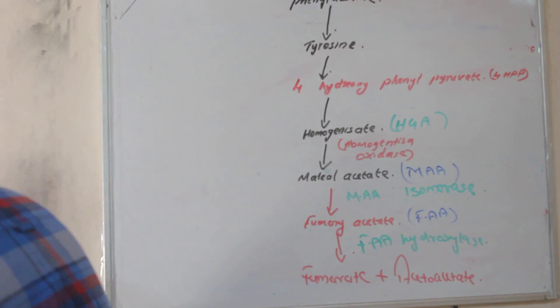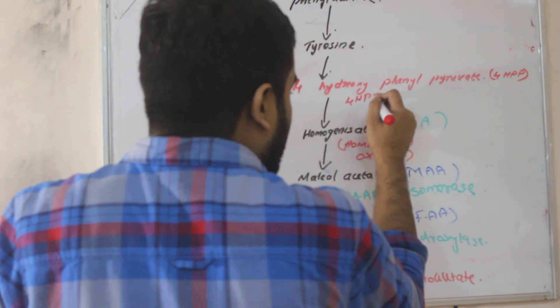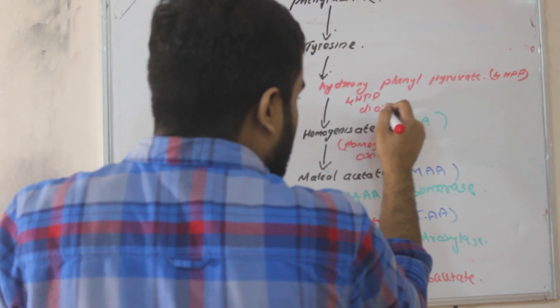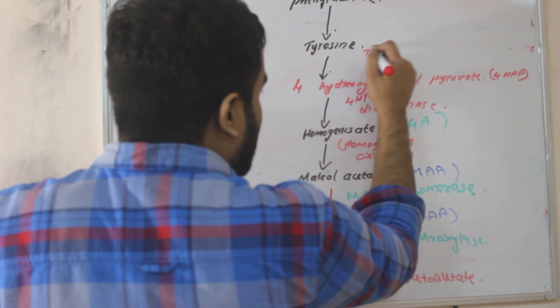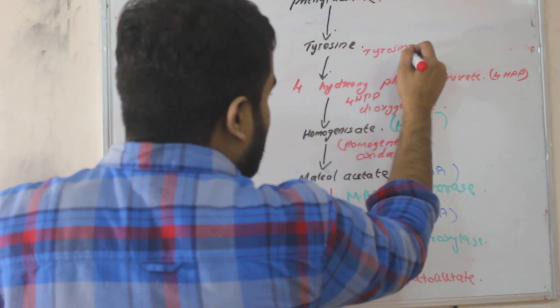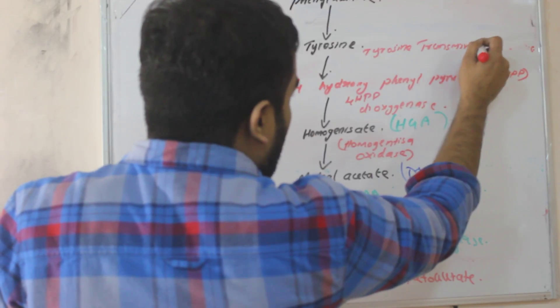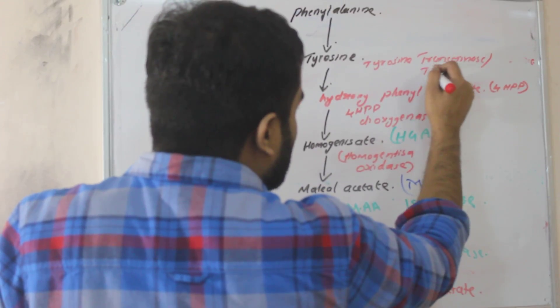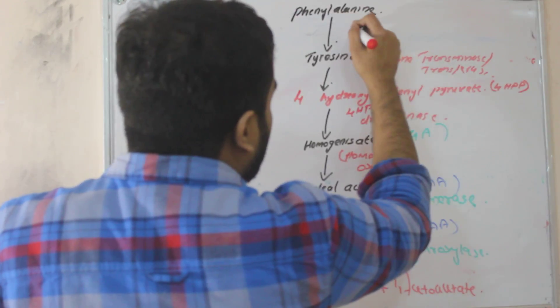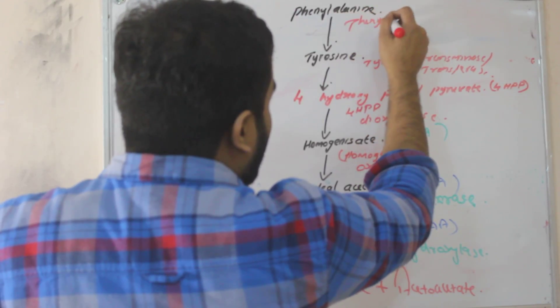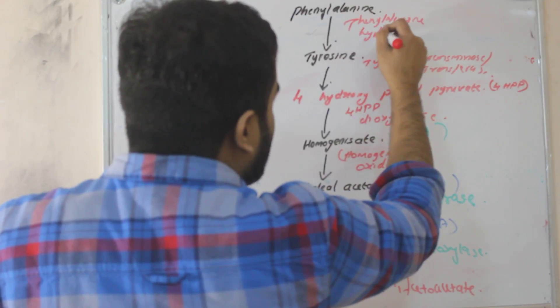Now the enzyme here is 4-HPP dioxygenase. Here it is tyrosine transaminase or you can call it as transferase. No problem anyone. Here it will be phenylalanine hydroxylase that we have already studied.